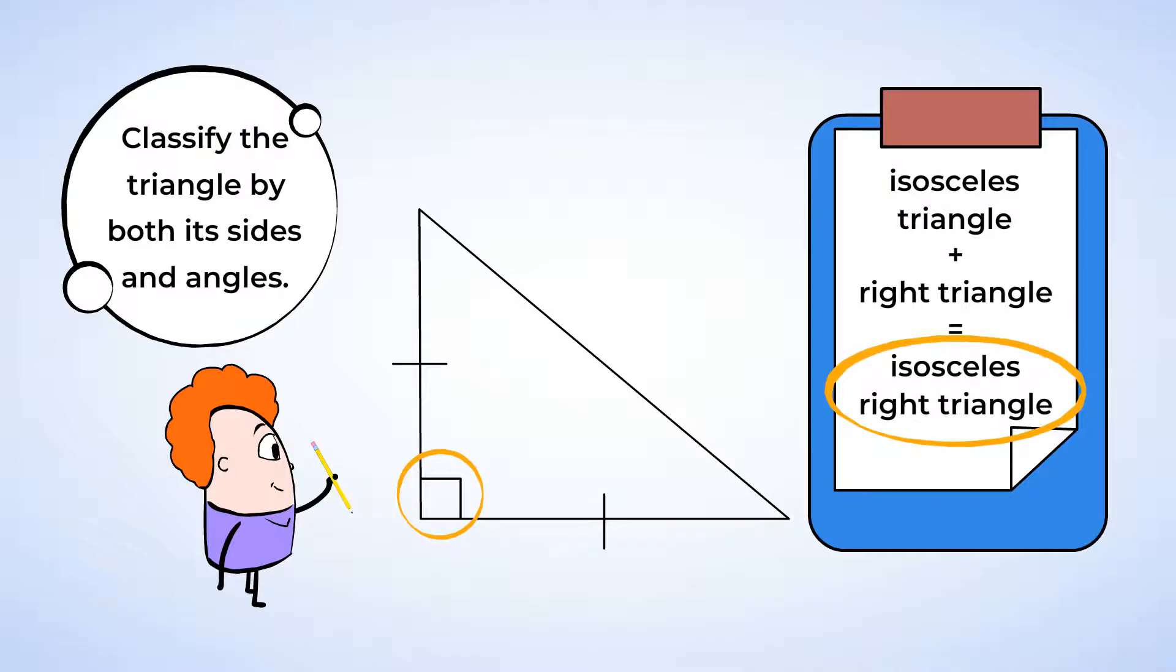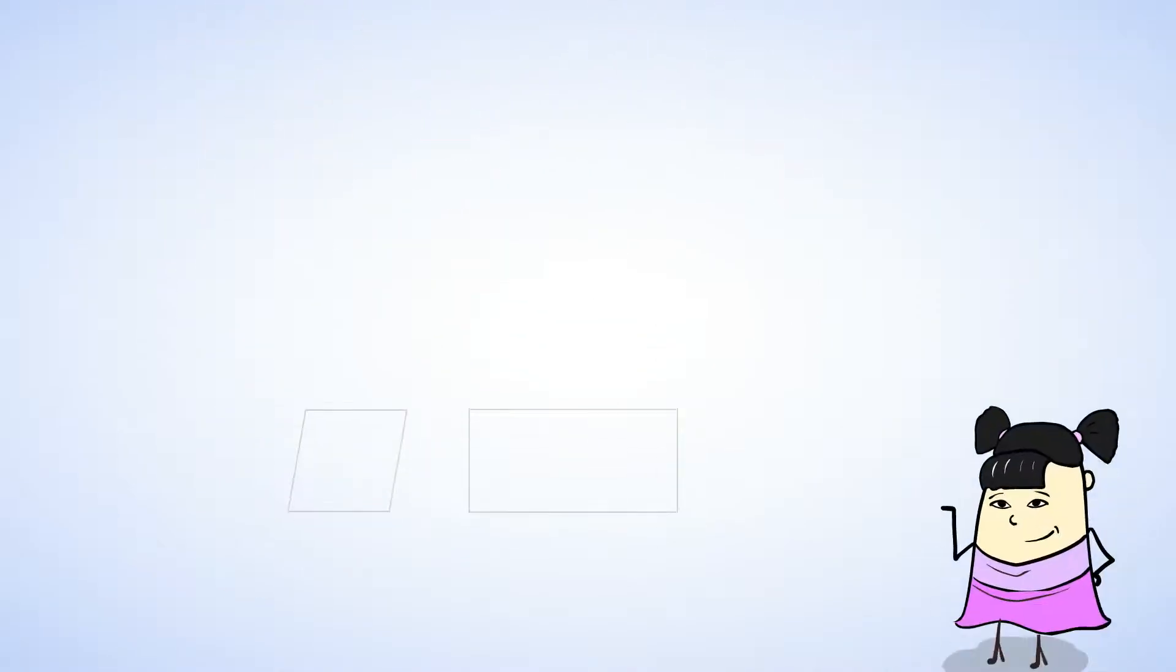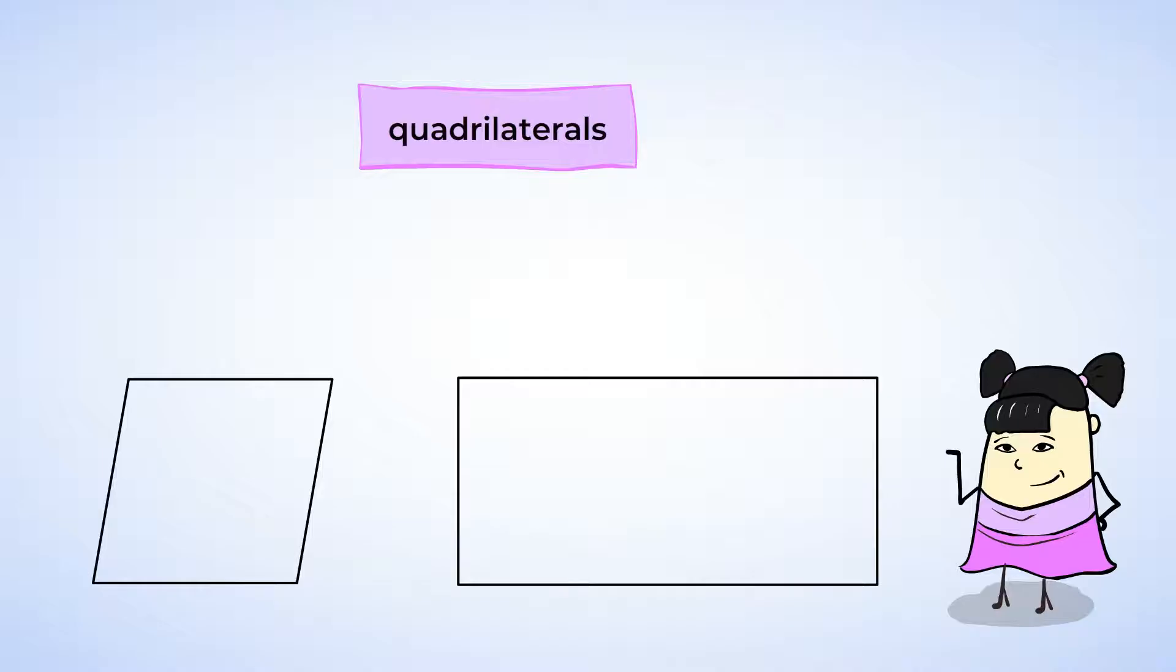I've had enough about triangles for the time being. Let's move on over to quadrilaterals. Quadrilaterals are shapes that have four sides, and there are many types of quadrilaterals. They can be classified by their sides and angles, too.